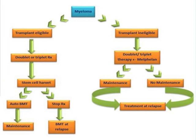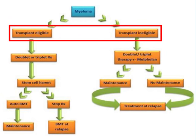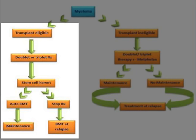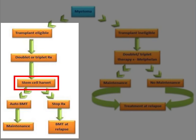The model for myeloma treatment hinges on whether a patient is transplant eligible or transplant ineligible. Transplant eligible patients are generally younger, considered to be less than 60 to 65 years of age, whereas anyone above 65 may be considered transplant ineligible. Transplant eligible patients may start their treatment with a combination of two or three agents. In most parts of the world, patients would get a novel agent — either an immunomodulatory agent or a proteasome inhibitor — sometimes in combination with a steroid or an alkylator as the initial treatment. After three to four cycles, most patients would have stem cells harvested.